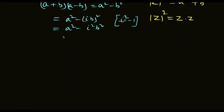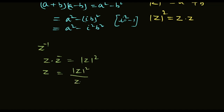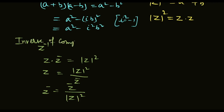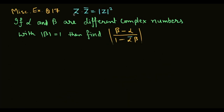इससे related एक property और करेंगे: z inverse को find करेंगे। z conjugate equal to modulus of z square, z equal to modulus of z whole square upon z conjugate. Therefore, z inverse equal to z conjugate upon modulus of z whole square. Inverse of complex number is z inverse equal to z conjugate upon modulus of z whole square.